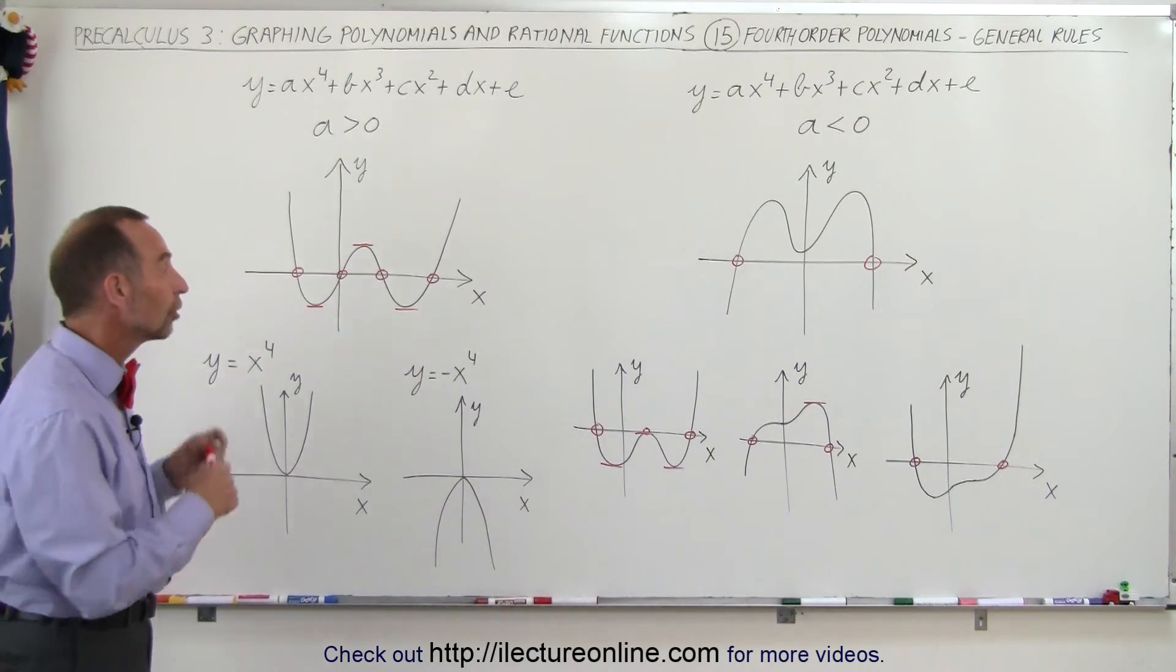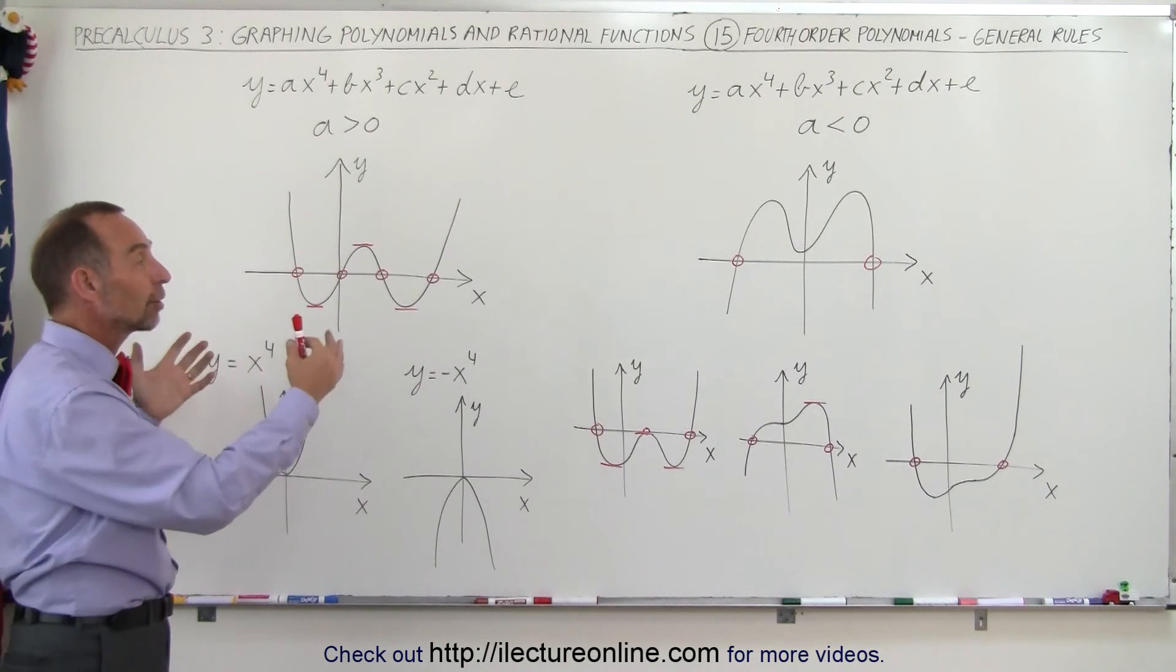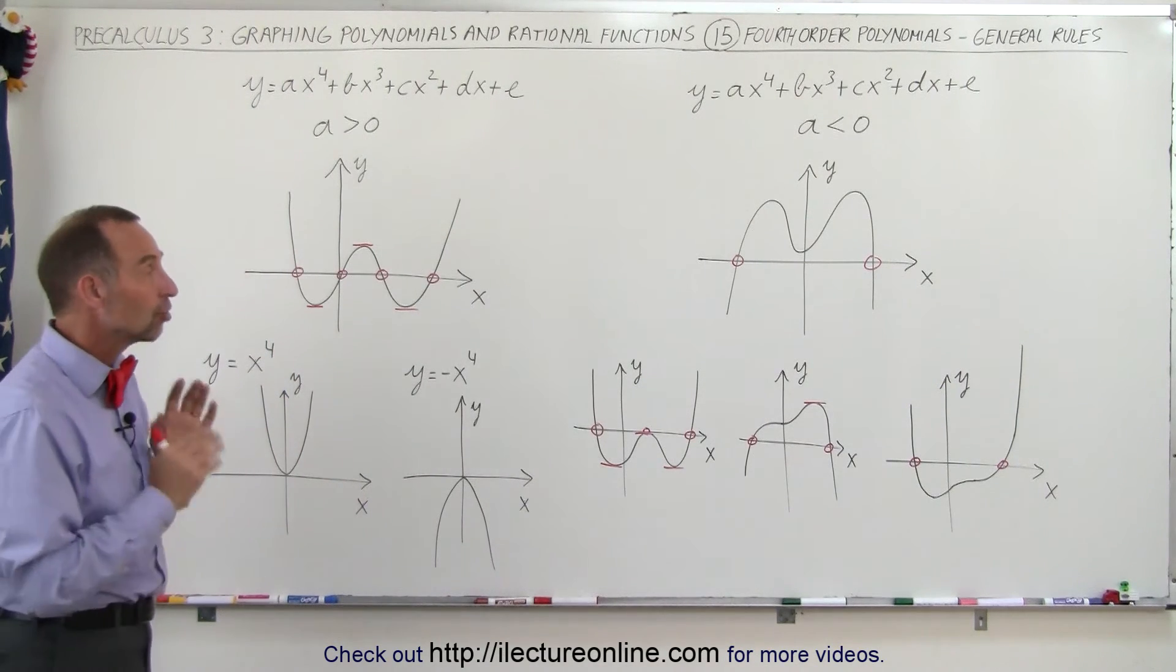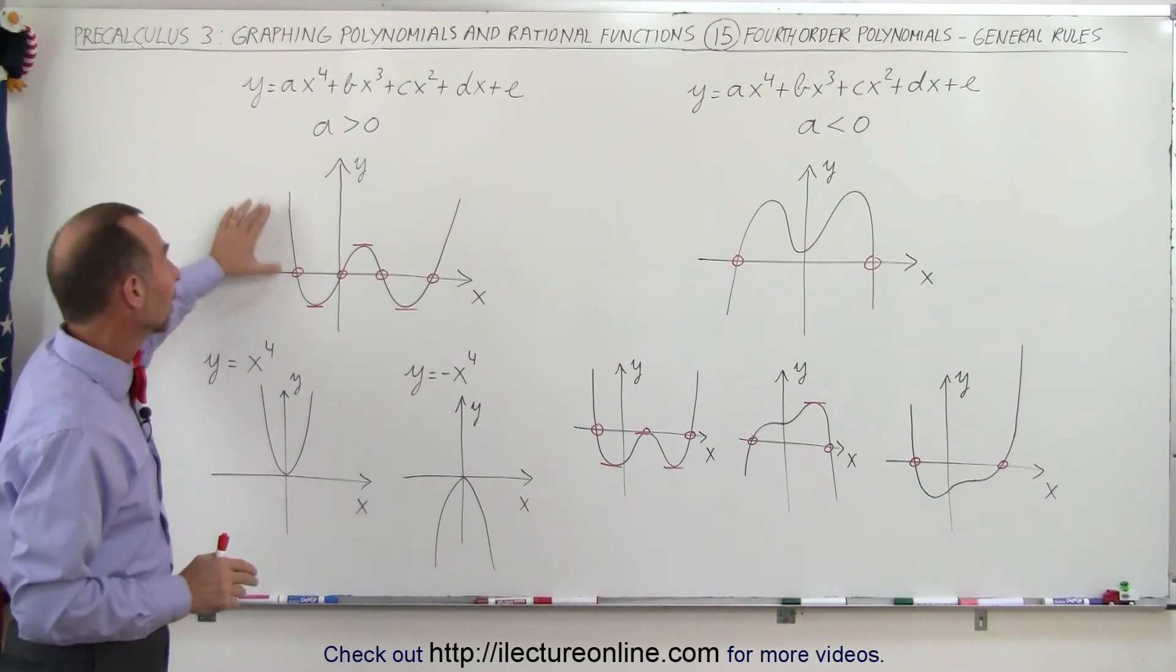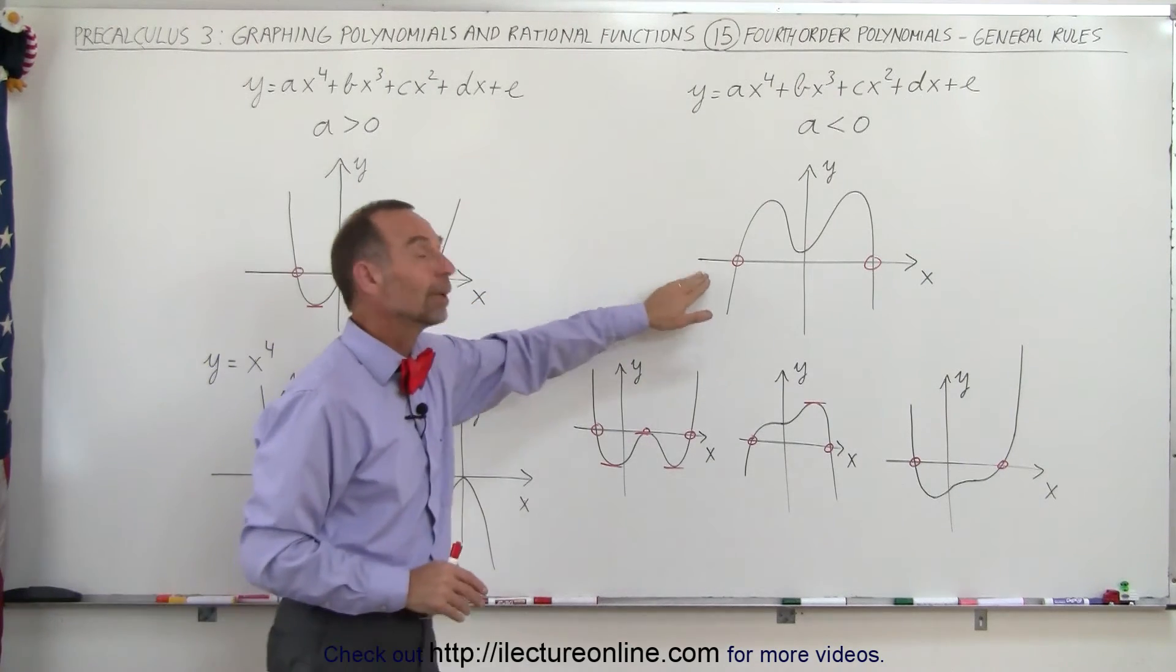Fourth-order polynomials can have graphs that look drastically different. But the general shape is like this when a is positive, and like this when a is negative.